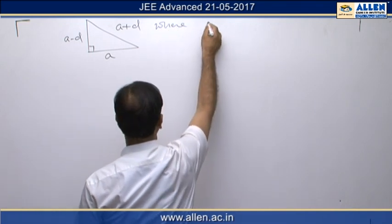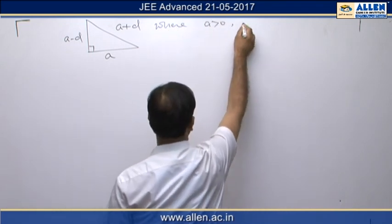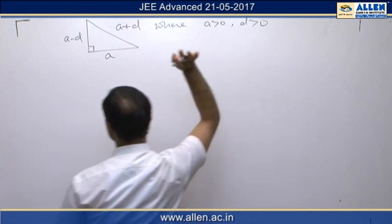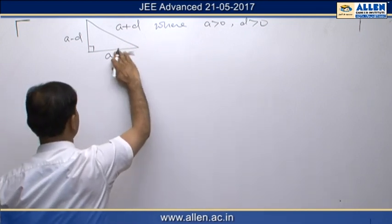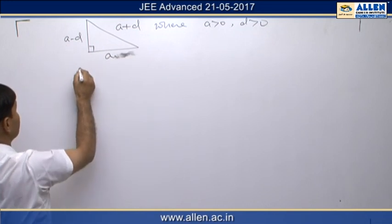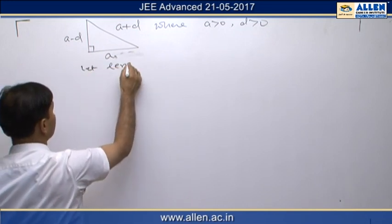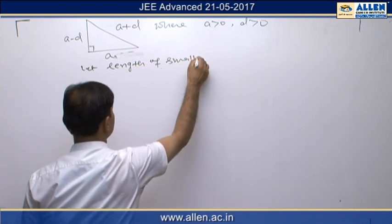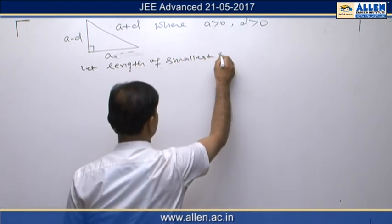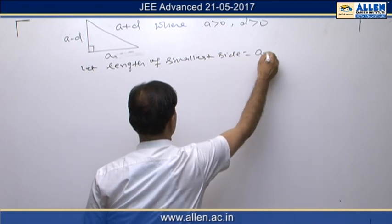We have considered that a is positive and d is also positive. The length of the smallest side, which is asked in the question, is a minus d.